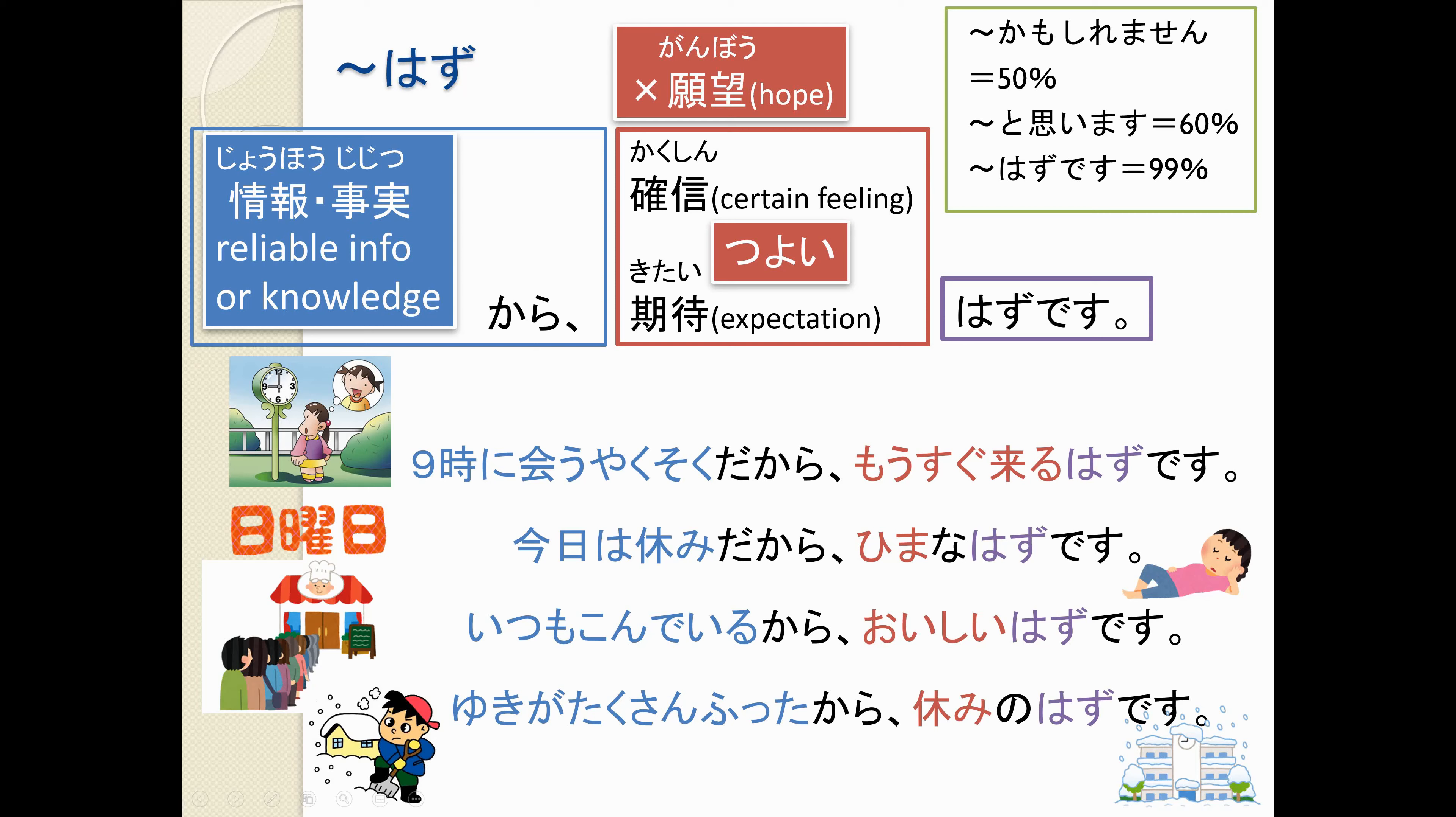So, きょうはやすみだから、ひまなはずです。 Because it's a day off, they should be free. いつも込んでいるから、おいしいはずです。 Because it's always crowded, it should be delicious. The restaurant should be. 雪がたくさんふったから、やすみのはずです。 Because it snowed a lot, it should be a day off at school.